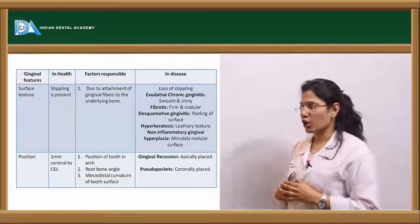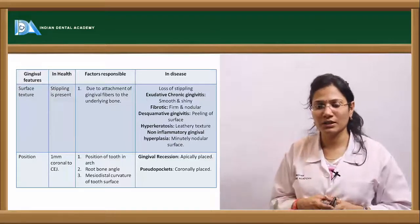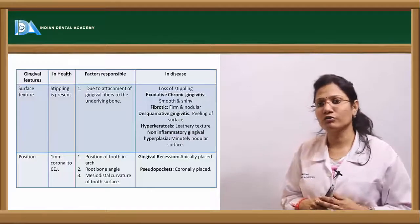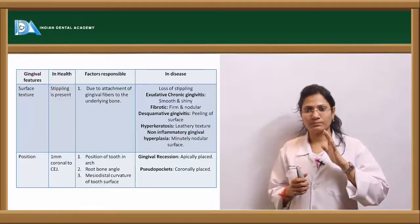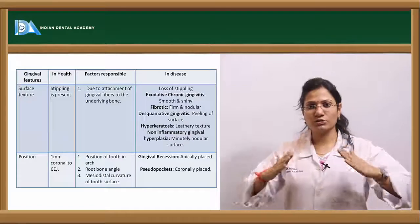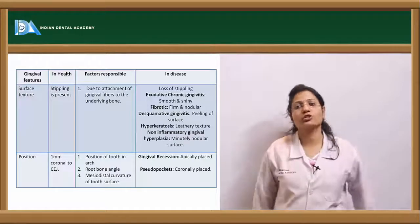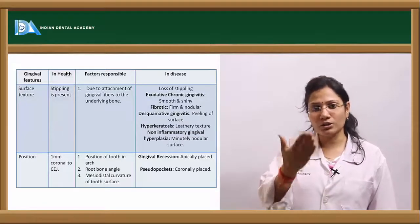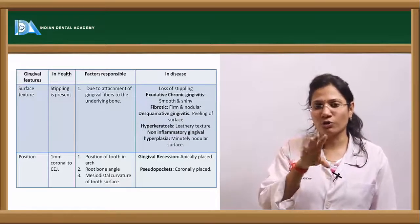In disease, there will be loss of stippling. In exudative chronic gingivitis, the surface will look smooth and shiny. To appreciate stippling, take a moist or dry cotton and wipe the areas. You look for stippling in your attached gingiva and the core of the interdental papilla. The lateral margins of the interdental papilla are continuations of the marginal gingiva, while the central core of the interdental papilla is a continuation of the attached gingiva.